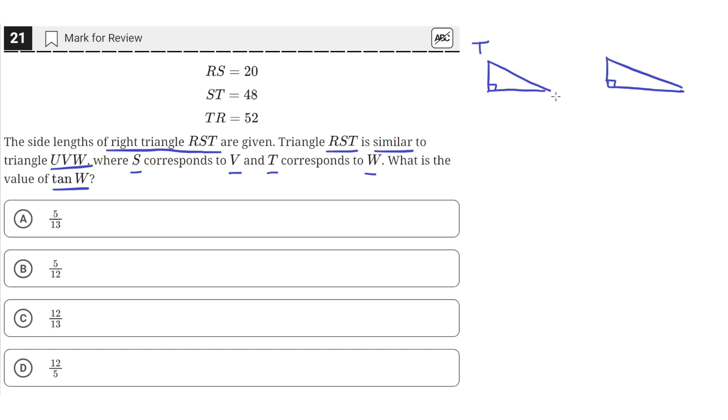T, R, and S. And then triangle UVW where S corresponds to V. So this will be V. And T corresponds to W. So then this one has to be U.